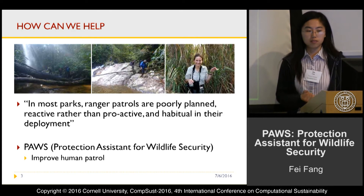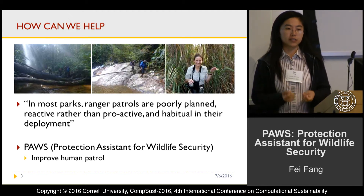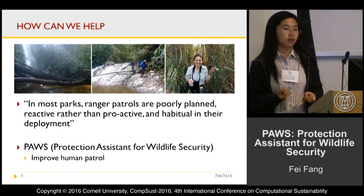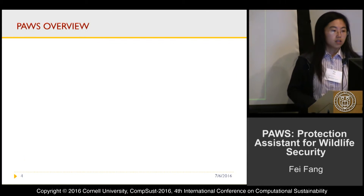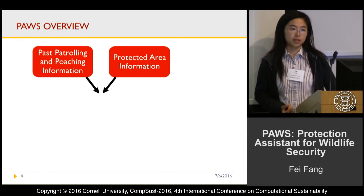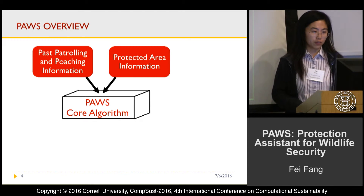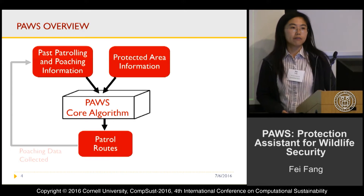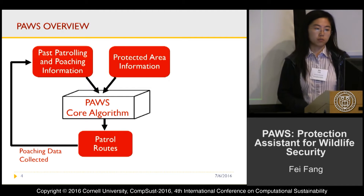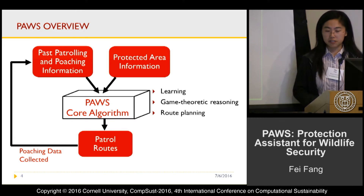We therefore developed PAWS, the Protection Assistant for Wildlife Security, which is based on historical data and provides proactive patrol strategies for rangers. PAWS takes into account past patrolling and poaching information and protected area information, then uses a core algorithm to generate patrol routes. As patrollers carry out these routes, more poaching data is collected and fed back to the algorithm to update results. The core algorithm weaves together learning, game-theoretic reasoning, and route planning.